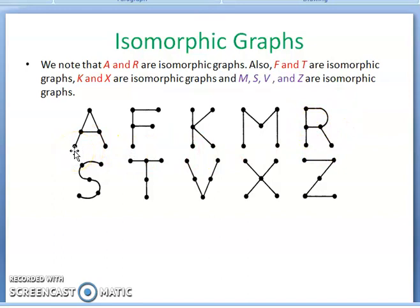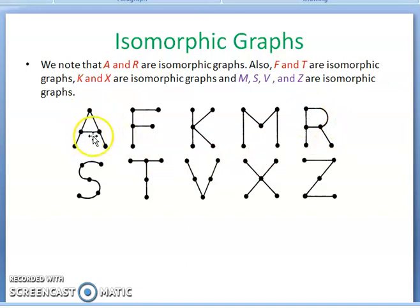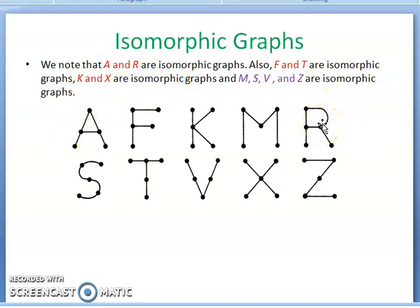Third, you take the degrees of each and every vertex. The degree-1 vertices are 2 in both graphs. The degree-2 vertex is 1 in both. The degree-3 vertices are 3 in A and also 3 in R. So graphs A and R are isomorphic. The three conditions are: number of vertices must be equal, number of edges must be equal, and degrees of corresponding vertices must be equal.